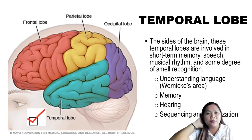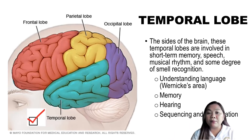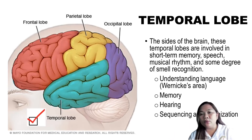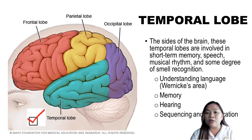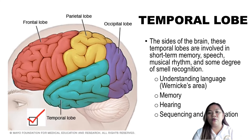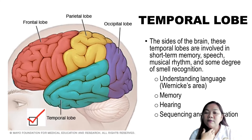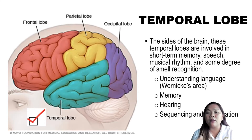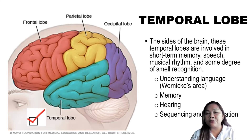On the side of the brain is our temporal lobe. The temporal lobes are involved in short-term memory, speech, musical rhythm, and some degree of smell recognition. Specifically, our temporal lobe is responsible for understanding language, memory, hearing, sequencing, and organization.